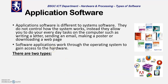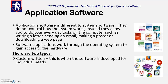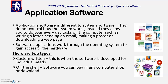Now, application software. This is the software you're more familiar with and would be more excited by. There are lots of examples you're familiar with. They don't control how the system works; instead, they allow you to do your tasks on the computer — such as writing a letter, making a poster, sending an email, downloading a webpage, or downloading files. They work through the operating system to gain access to the hardware. There are two types: custom written, where you get a developer to write software specifically for your individual needs, or off-the-shelf software, which you can buy in any computer shop or download. Most people buy them online these days.